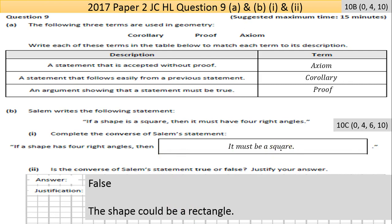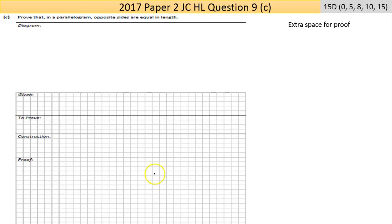Now Part C here is a proof. You're asked to prove that in a parallelogram, opposite sides are equal in length. This is a screen grab taken from the exam paper, so they've filled in the sections you have to fill in.